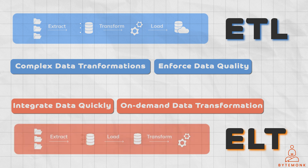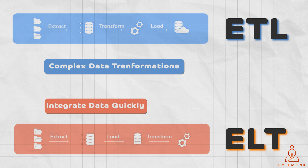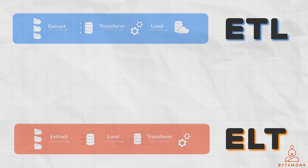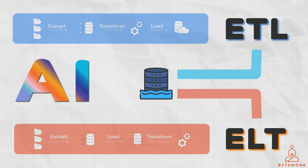You can also use both ETL and ELT modes in the same data integration project. For example, you might use ETL mode to perform complex data transformations on a small subset of your data, and then use ELT mode to load the rest of your data into a data lake or data warehouse for analysis. Today, ETL and ELT are being used in conjunction with other data technologies such as big data lakes and AI — for example, to extract and transform data from a variety of sources into a data lake where it can be analyzed using AI tools to identify insights and trends.